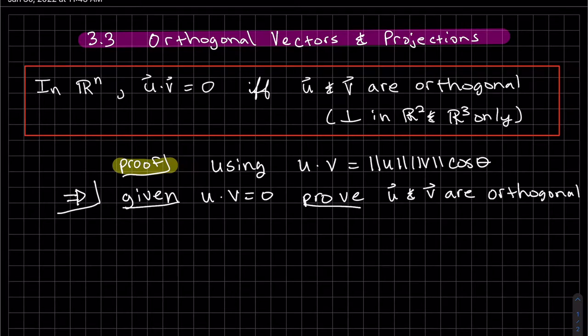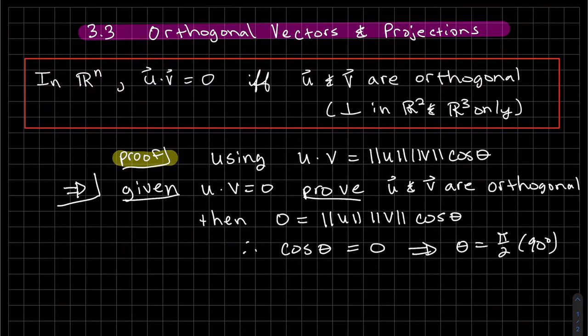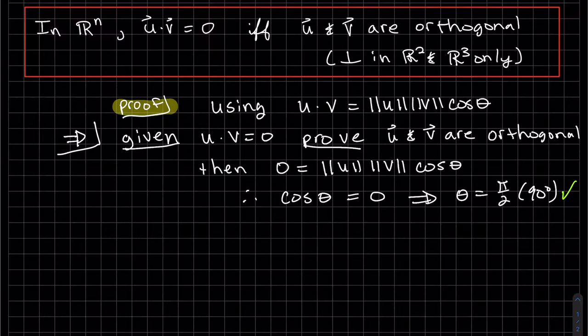So looking at the alternate dot product, if the dot product is zero, then we have, and we assume these vectors are not zero. So therefore, which implies theta is 90 degrees or pi over 2. So that's proven. Going the other direction.